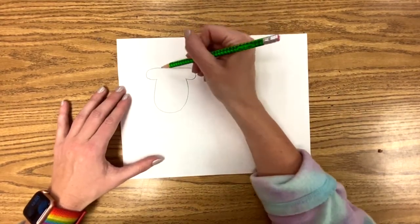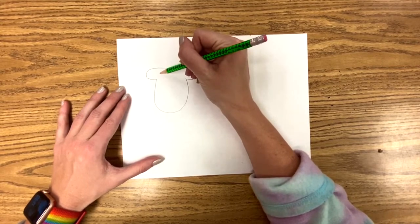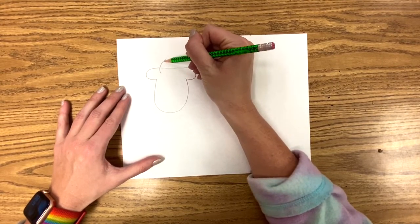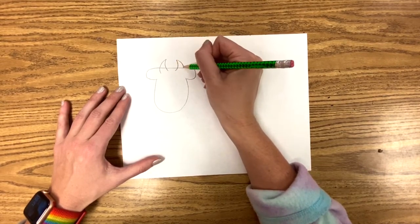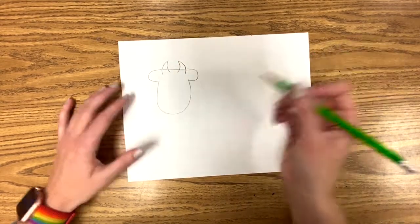Next, let's do the horns. So, up on the top of the head, we're gonna go curve up, curve down, make a point. Curve up, curve down. I made a point. Good job.